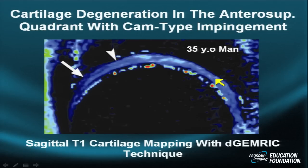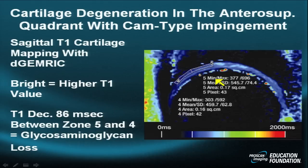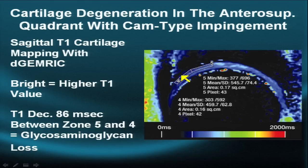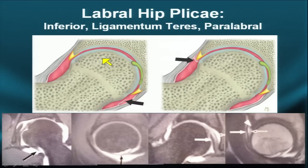Using dGEMRIC or contrast-enhanced MRI, the same phenomenon is visible on a T2 relaxivity map. A sagittal image demonstrates different zones: the less healthy anterior zone has a lower color arrangement, while the healthier posterior area has a higher color arrangement. The T1 relaxivity between these two areas is about 86 milliseconds higher in the healthier area, reflecting alteration in proteoglycans and glycosaminoglycans.